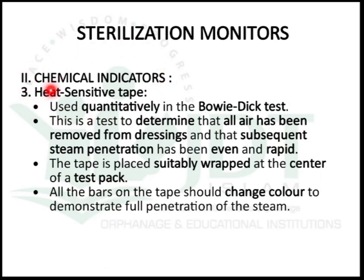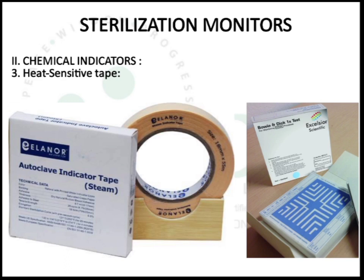Heat-sensitive tape is used as a chemical indicator, used quantitatively in the Bowie-Dick test to determine that all air has been removed from the dressing and that subsequent steam penetration has been even and rapid. The tape is placed suitably wrapped at the center of a test pack, and after sterilization all the bars on the tape should change color to demonstrate full penetration of steam.